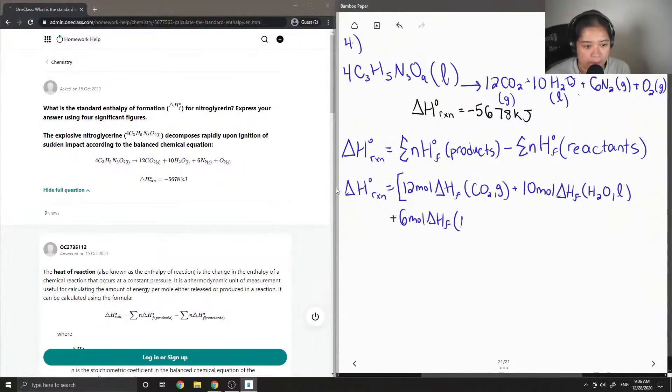Okay, so this is plus 10 times the delta H of formation of H2O liquid, plus 6 times the delta H of formation of N2 gas, and then lastly, for our products, we have 1 mole times the delta H of formation of oxygen. Okay, so the equation doesn't end here because that was only our products side. We then have to subtract by the delta H of formation of reactants, which is only the nitroglycerin. So it's 4 times the delta H of formation of nitroglycerin.